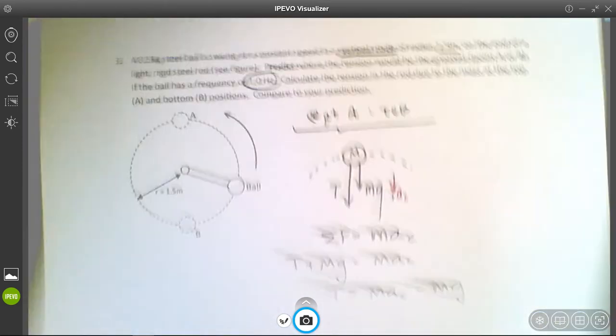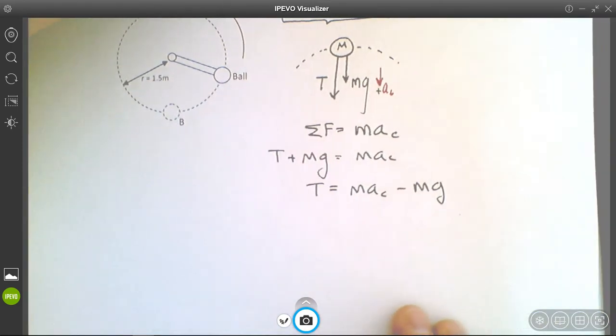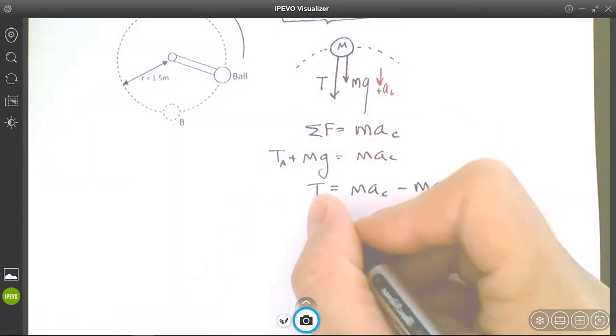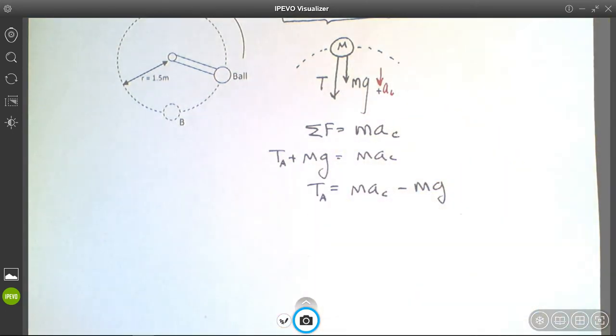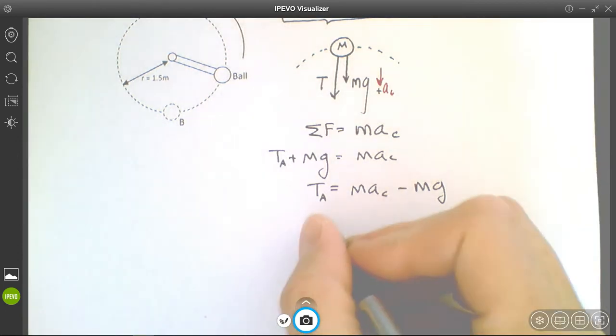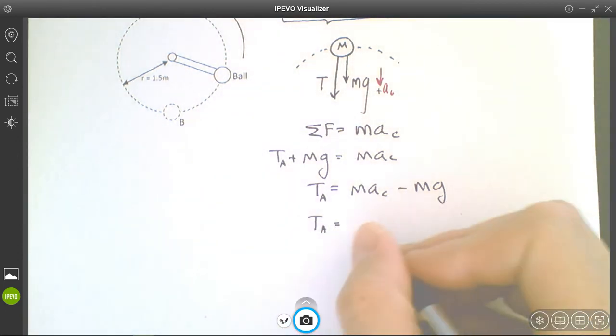That's pretty self-explanatory at this point. I'm going to put subscript A because it's at point A. Now the tension at point A is the mass...